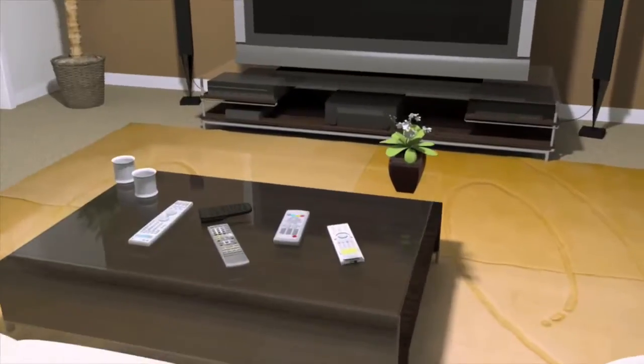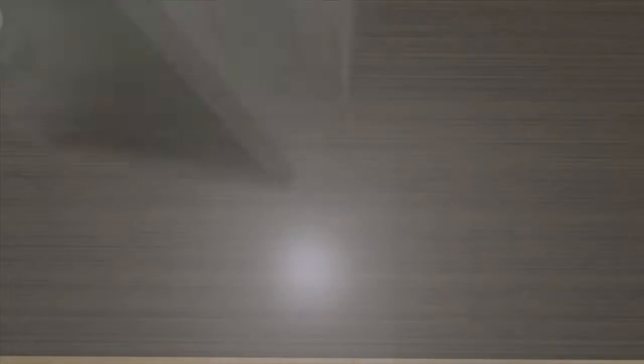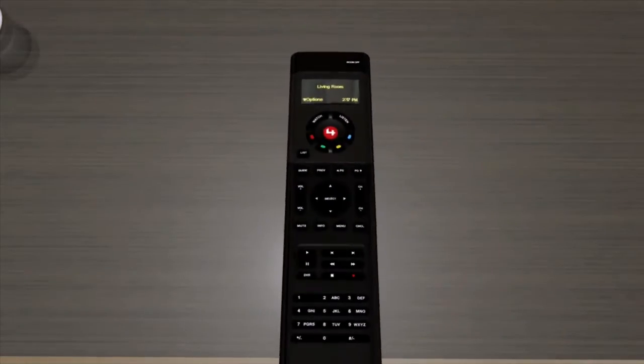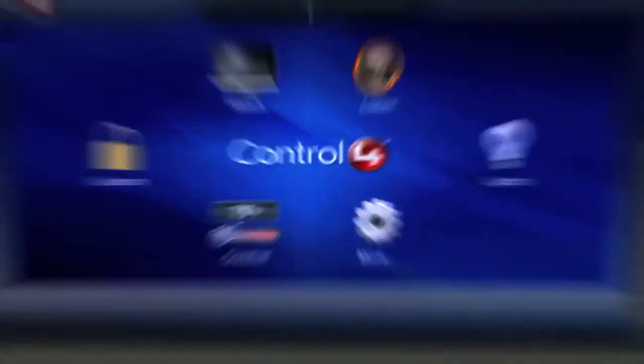Just think about all the remote controls that cover the coffee table. Which one goes with what? The solution is easy. Control 4. As you're about to find out, life's better when everything works together.